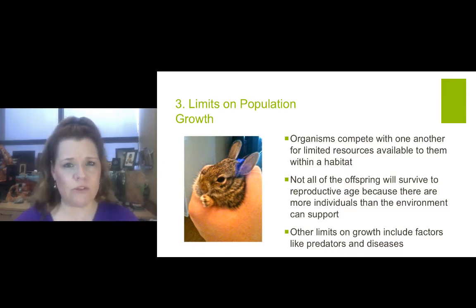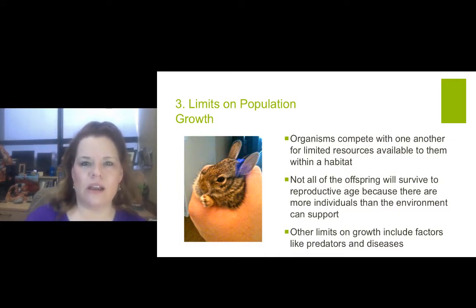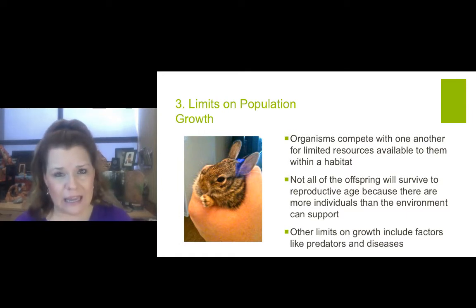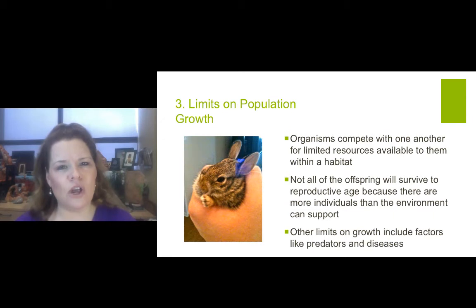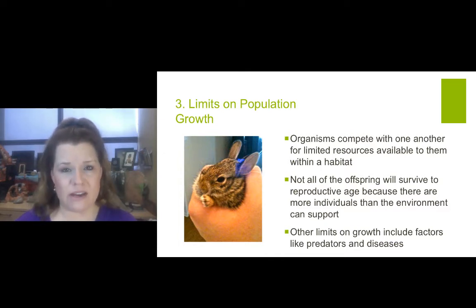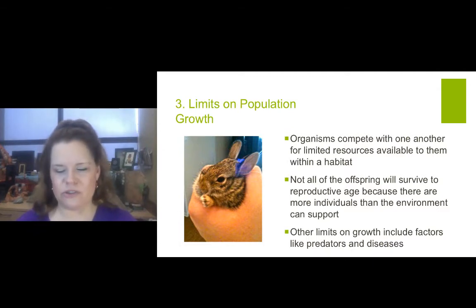In the human realm, we try to intervene with modern medicine to try to keep our offspring alive. Of course, we don't have as many offspring generally speaking — right here in the United States, we don't have as high a birth rate as some other countries. So we have more resources to provide, and that matters when we're looking at any type of species.